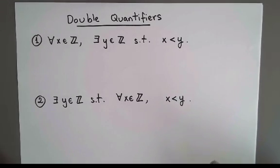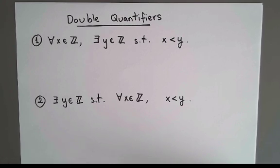In this video, I will show examples of mathematical statements that have two quantifiers, and I will explain why the order of these quantifiers matters.